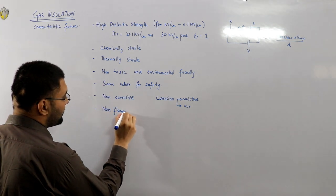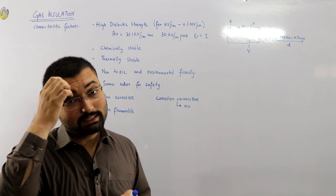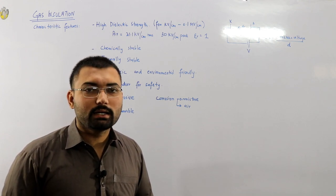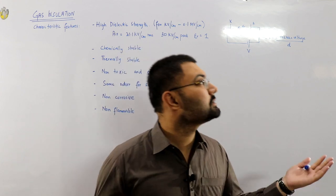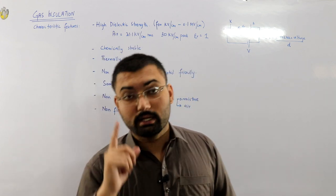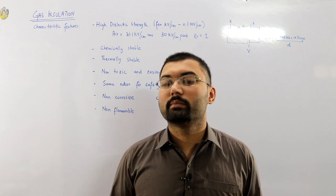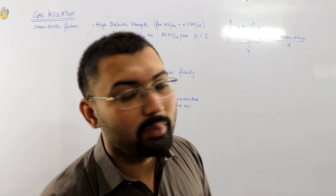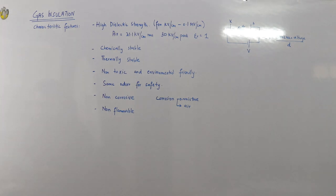The next property: it should be non-flammable. The ignition temperature should not be low. Oxygen, for example, does not burn itself — it helps in burning but is itself non-flammable. The gas used as insulation should similarly be non-flammable, because if it were flammable and someone lit a cigarette nearby, everything would ignite. So the gas must be non-flammable.